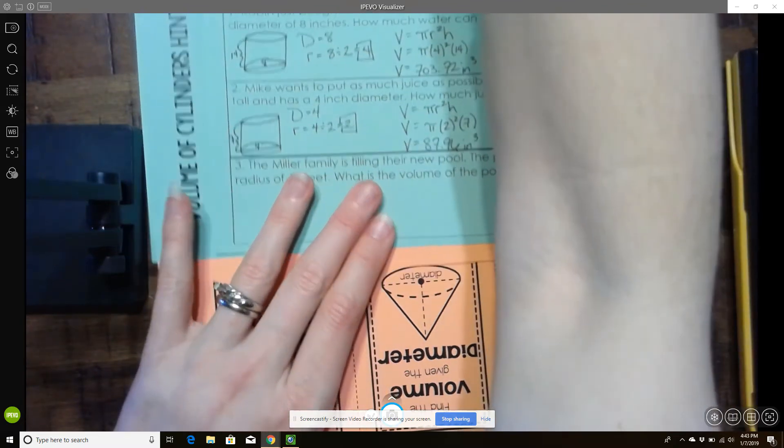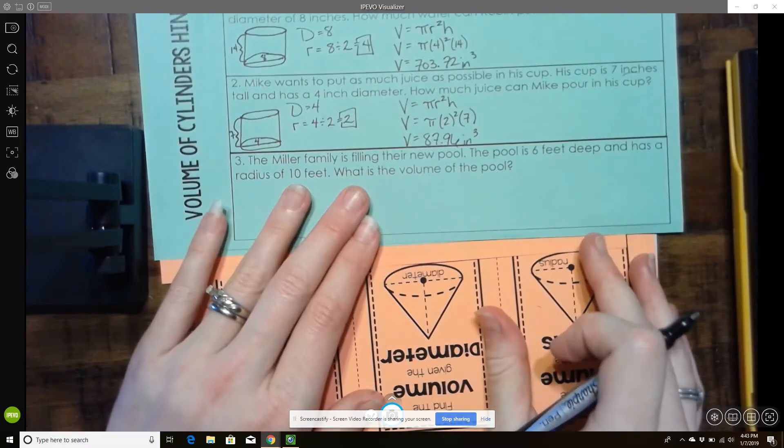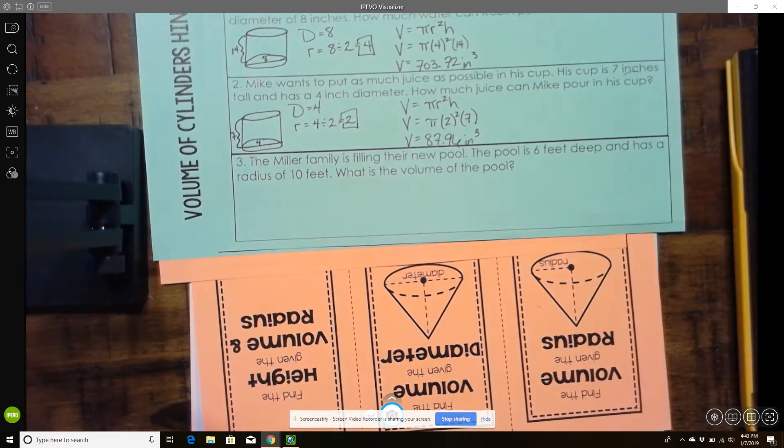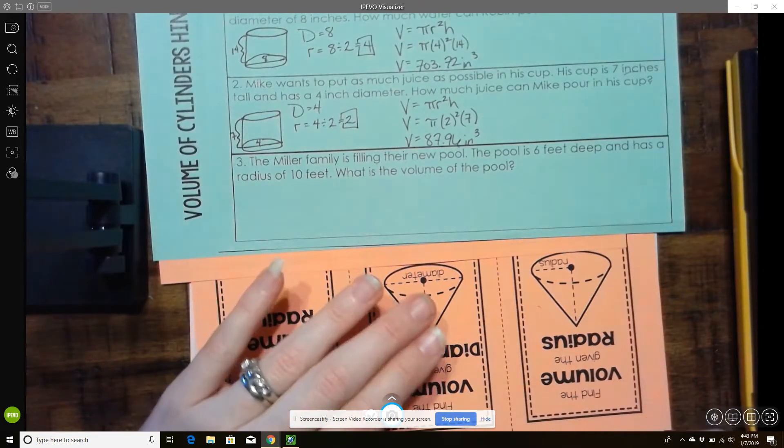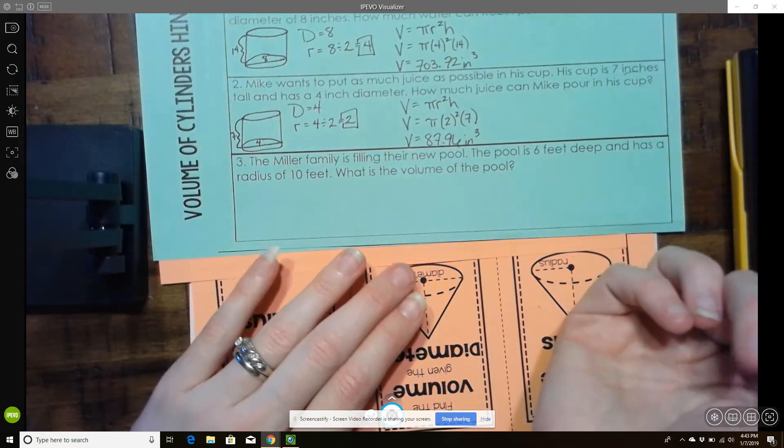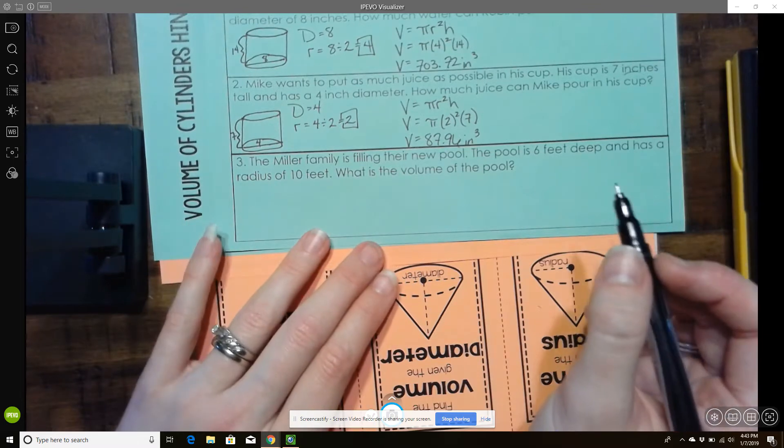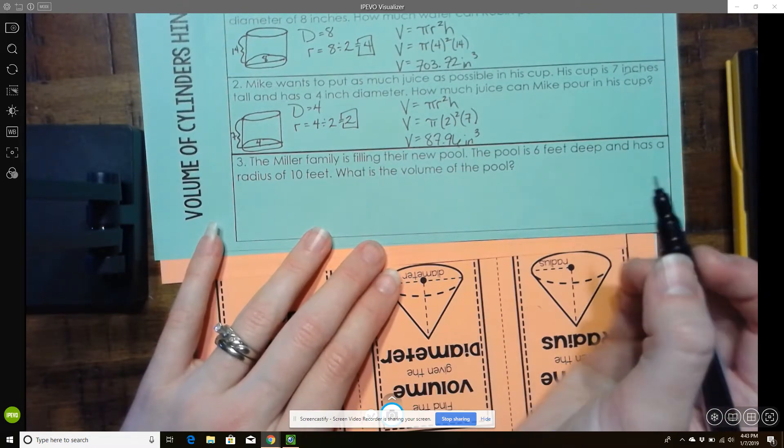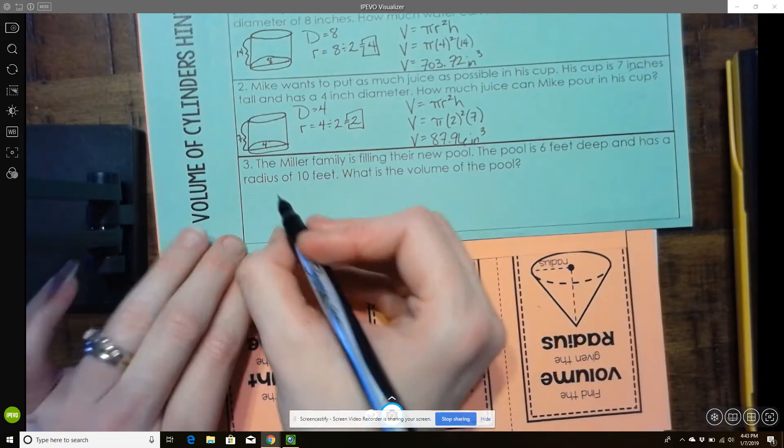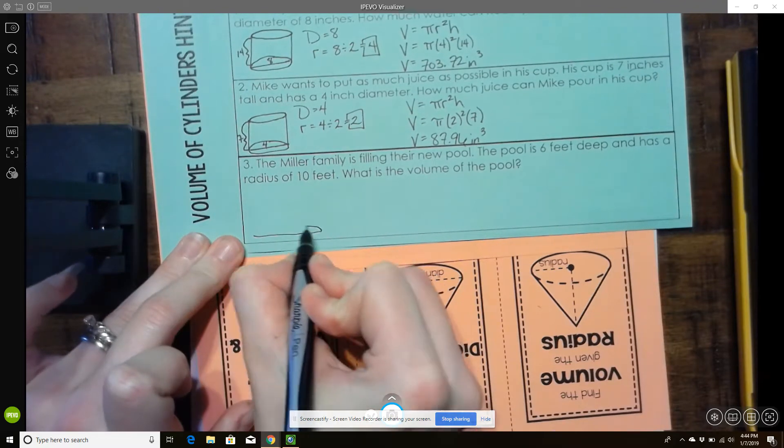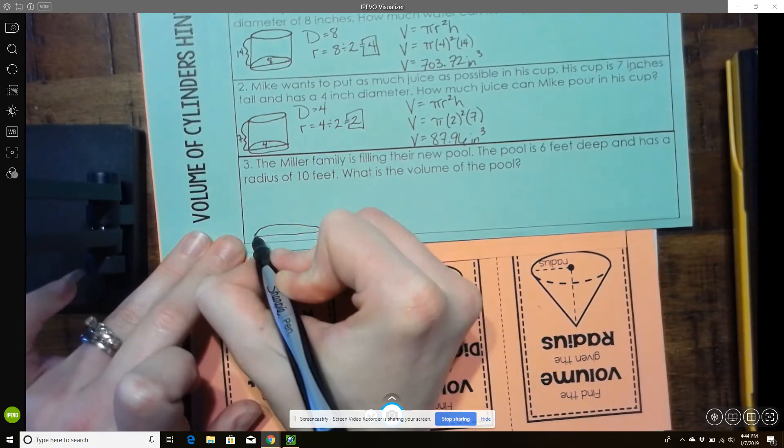All right. And the last one. The Miller family is filling their new pool. The pool is 6 feet deep and has a radius of 10 feet. What is the volume of the pool? All right. So we've got a pool. Draw this one a little bit bigger. Pools are usually bigger than cups.